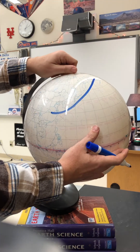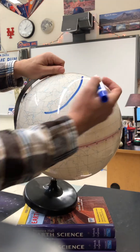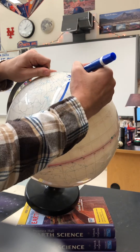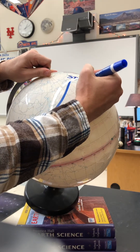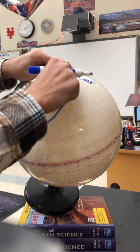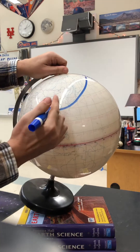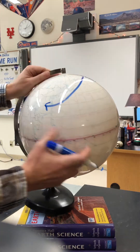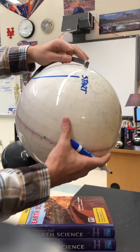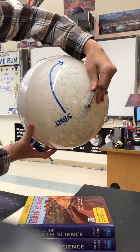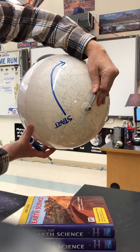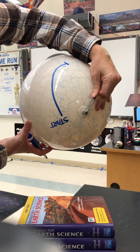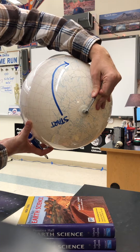Well, on a rotating planet you can't draw a straight line. This is where I started, and this is where I ended up. So in the northern hemisphere, if you look at the direction that the arrow started and where it ended up, that's a curvature to your right from the perspective of the observer.